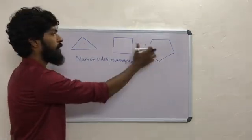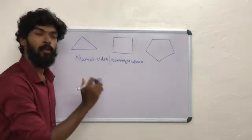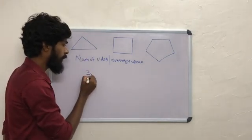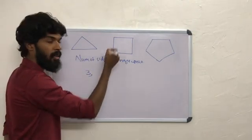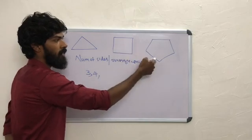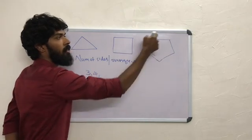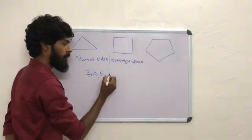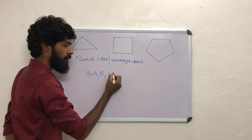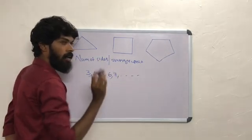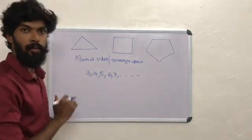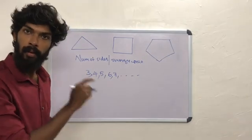How many sides are there? Here: 3 sides. Here: 4 sides. Here: 4 sides. Here: 5 sides. Here: 6 sides. Here: 6 sides. Here: 7 sides. Here: 2 sides — that's the same. Here: 6 sides.